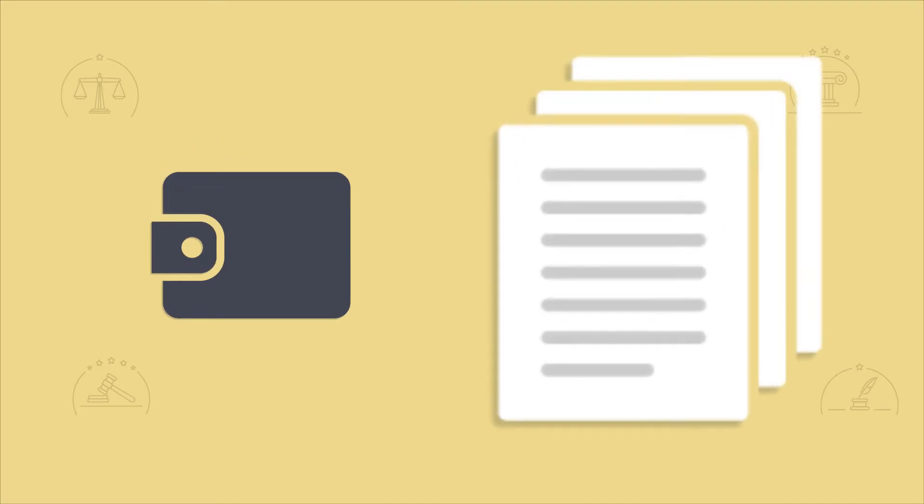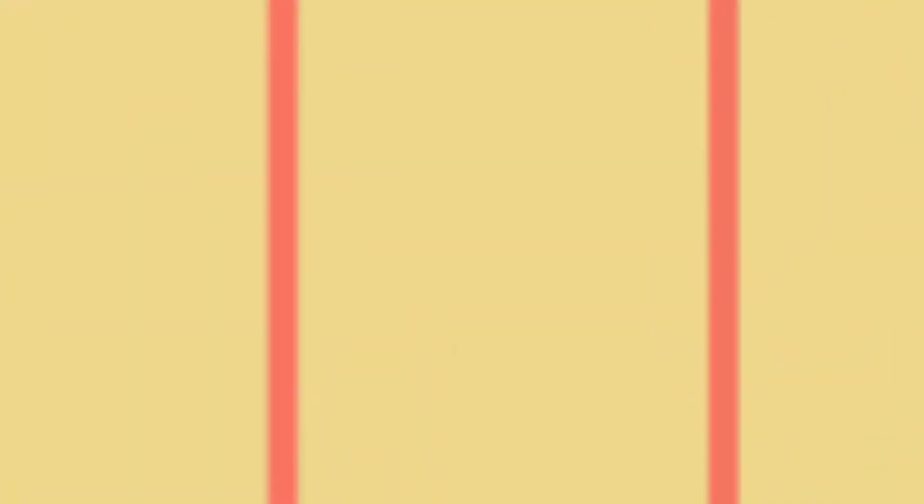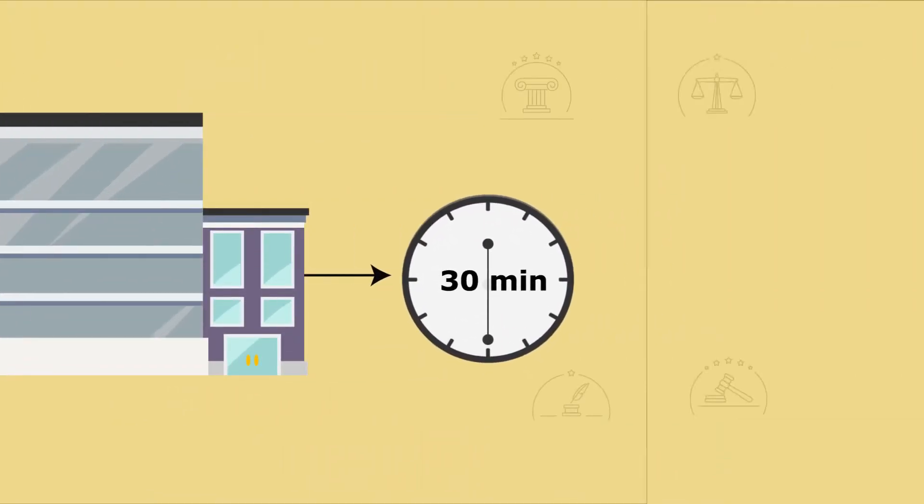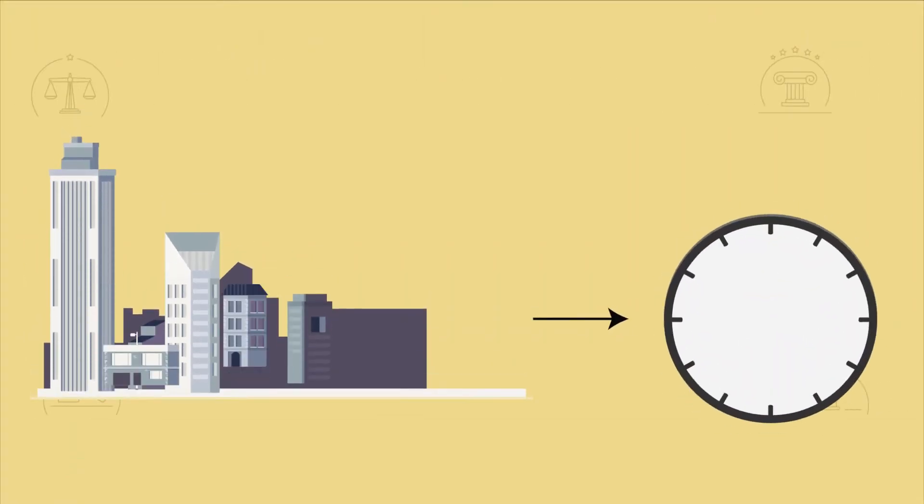Once the premium for the bond is collected and the paperwork is complete, our bail agent will turn the bond in and the defendant will be released. Average release times for small stations are around 30 minutes, while bigger facilities can take 6 to 12 hours.